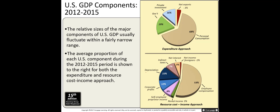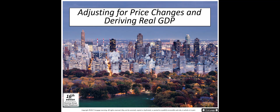Looking at GDP components using the two approaches: in the expenditure approach, the biggest component is spending on consumer goods at 68 percent, followed by government spending, then investment. In the income approach, the biggest component is employee compensation — wages — followed by depreciation, then corporate profits.